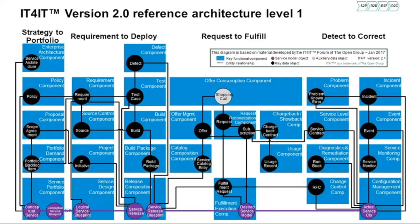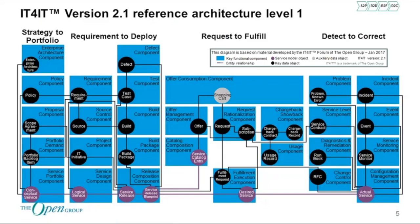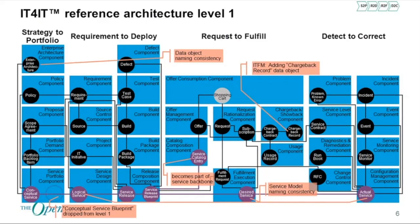Looking at the level one diagram itself — what you see here is v2.0, which you should all know and love. Now shifting into v2.1: did you see what changed? Probably not, which is a good thing. The changes are very small and should be, because a lot of people take this level one diagram as a starting point, and you've all learned it. So we haven't dramatically changed what you start out with, but there are a few changes in this diagram.